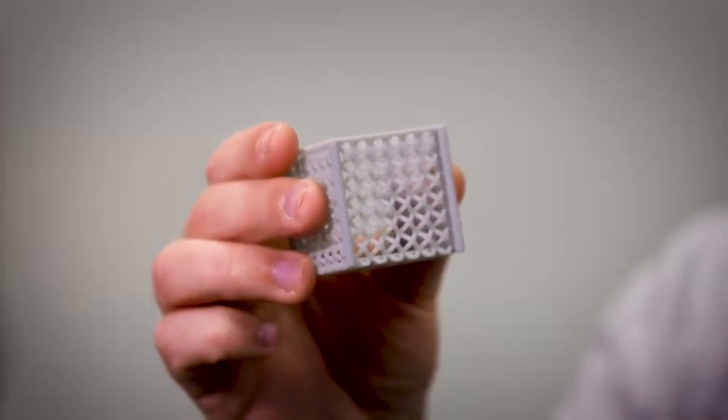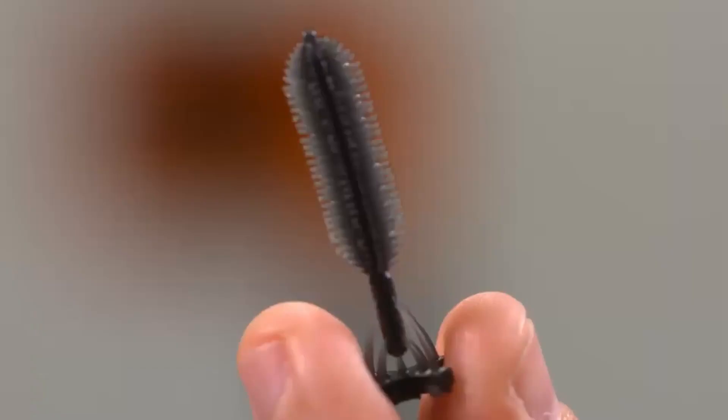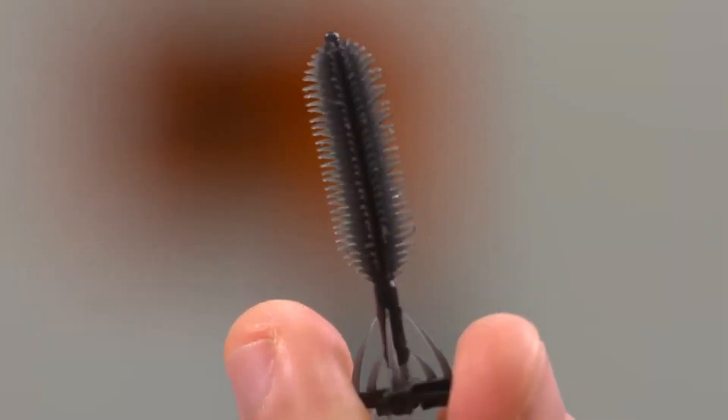The printer comes with a range of engineering grade materials: a choice of rigid materials, elastomeric, a jewelry casting material, and a material simulating polypropylene.